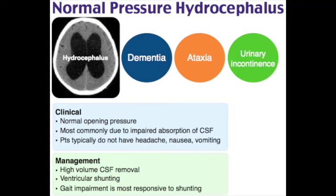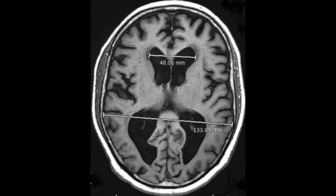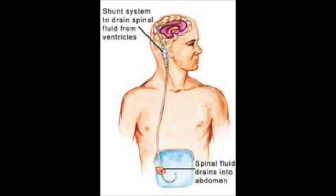Dementia and cognitive dysfunction in NPH include impaired executive function and psychomotor depression. Urinary incontinence may present as urgency early on; patients may also have hyperreflexia, spasticity, lethargy, and weakness. For diagnosis, neuroimaging shows enlarged ventricles out of proportion to sulcal dilation; MRI is superior to CT. LP: CSF pressure is usually normal; removing fluid during LP may improve symptoms (therapeutic). Management: ventriculoperitoneal shunt is the treatment of choice — gait abnormality usually most improved. Remember: VP shunt is treatment of choice in NPH but only a refractory treatment in idiopathic intracranial hypertension.